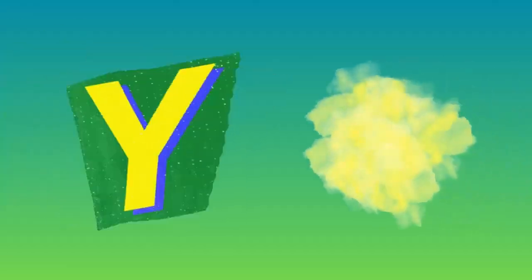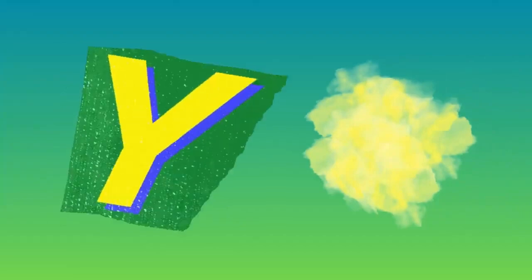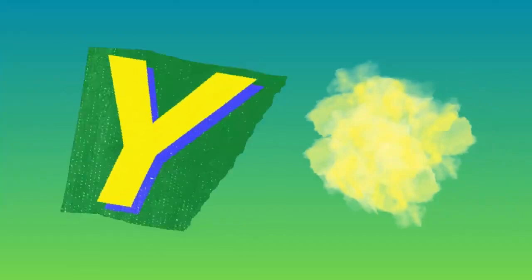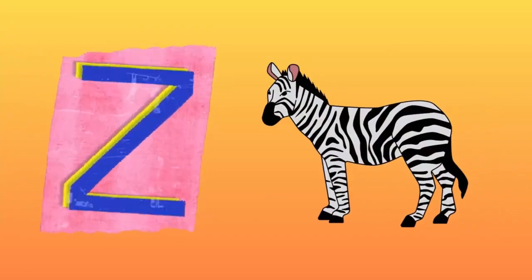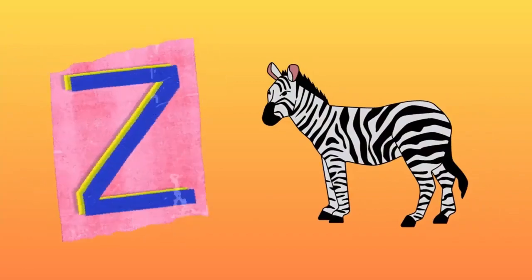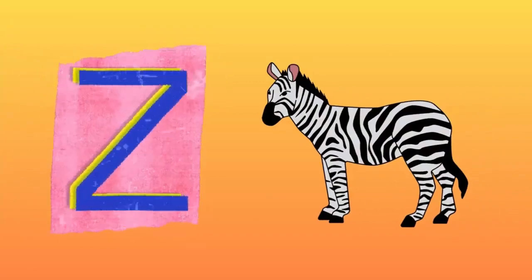Y is for yellow, y-y-yellow. Z is for zebra, z-z-zebra.